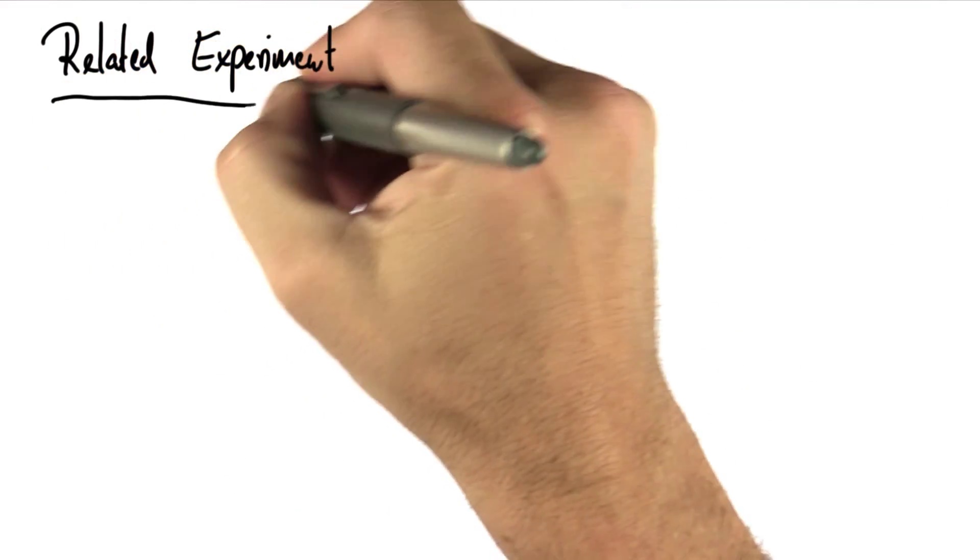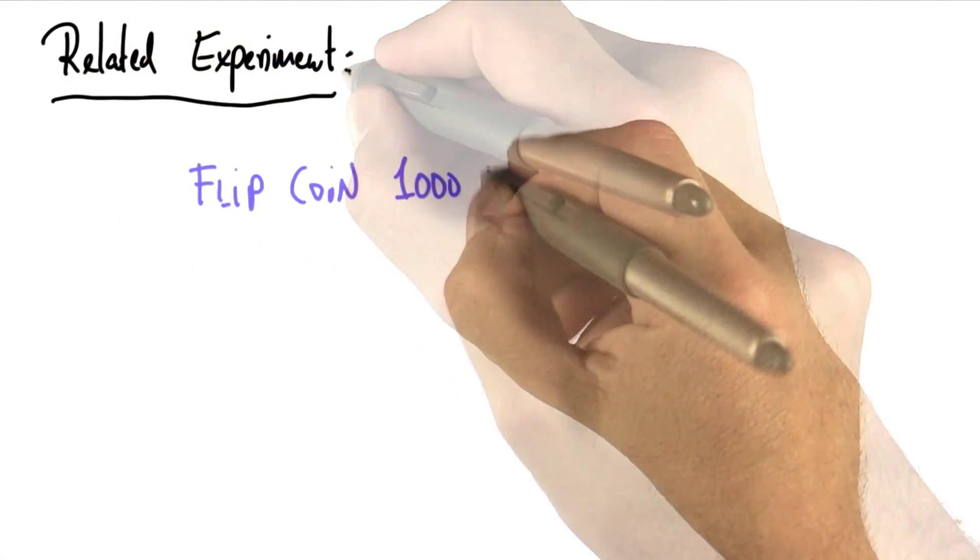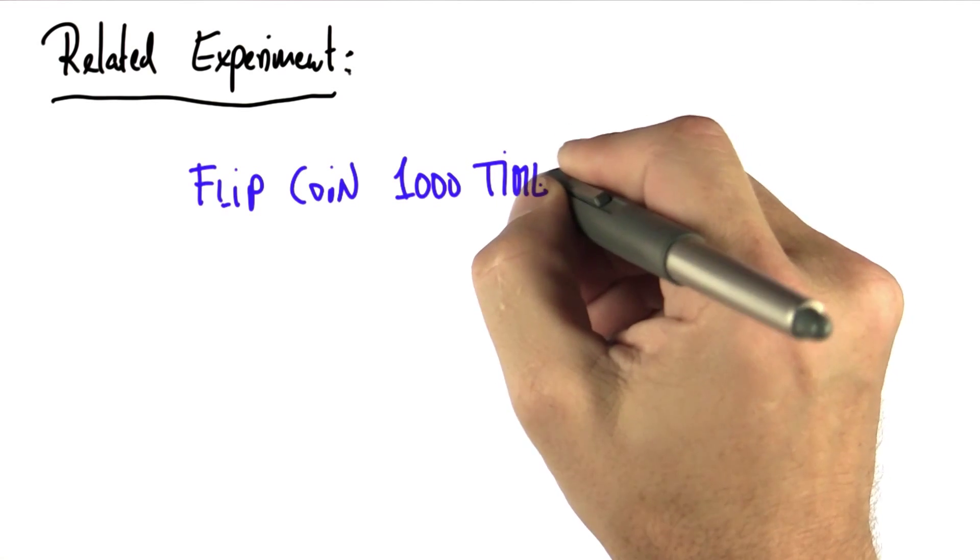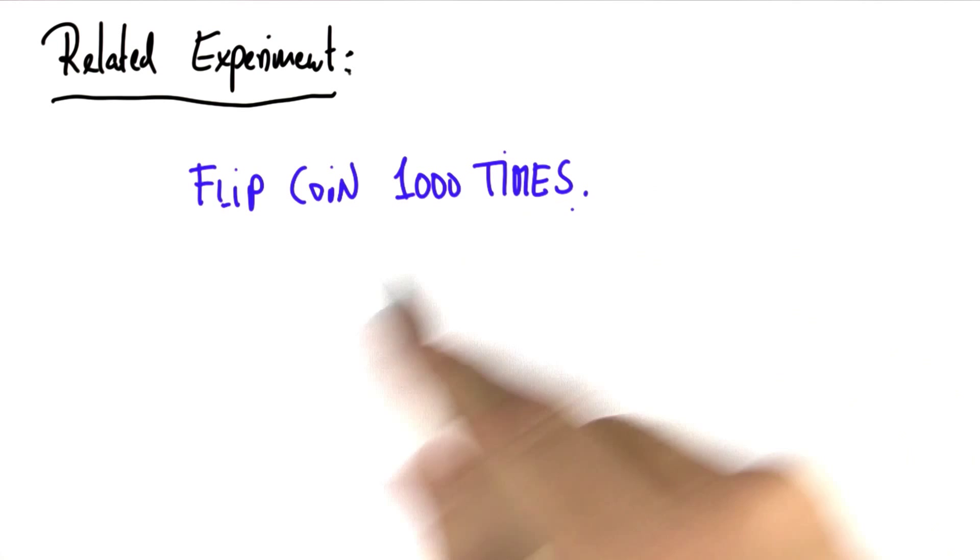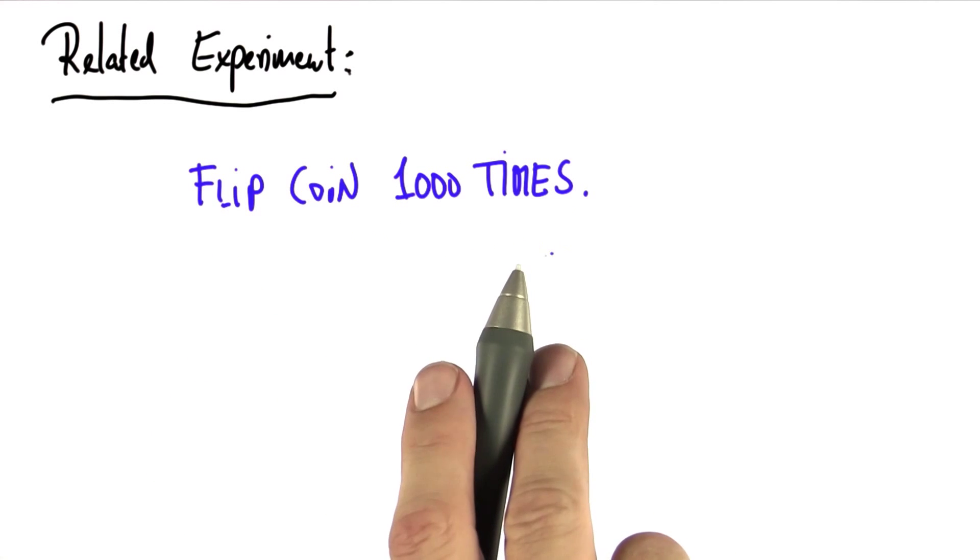So I did a related experiment. I actually wrote a piece of software to flip a coin a thousand times. And if you did the last optional unit on programming, you wrote a piece of software to flip a coin a thousand times.